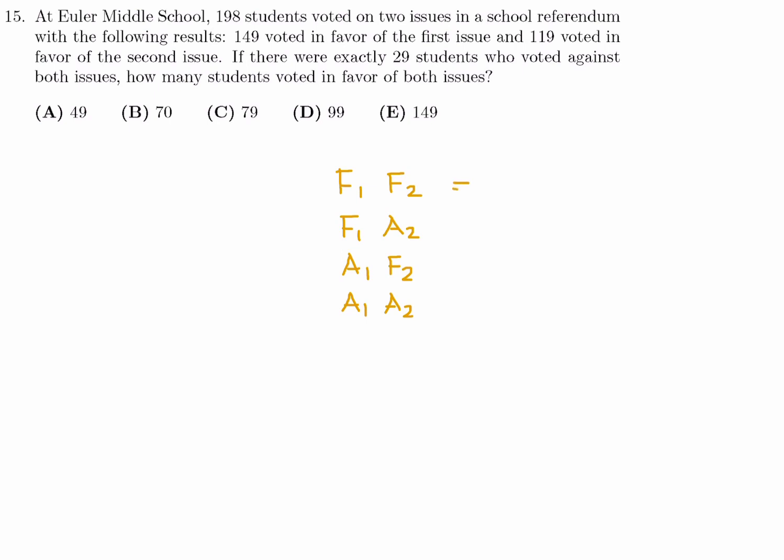Well, I'll label these. I'll call this guy A. I'll call this B, C, and D. I think that will help. Well, the first thing is that all of the students combined will be A plus B plus C plus D. And they tell me that is 198 in the question. And then they also tell me that 149 students voted in favor of the first issue. So that means A plus B is 149. 119 voted in favor of the second issue. So that means A plus C is 119. And then 29 voted against both issues. So according to my labeling, that means D is 29.